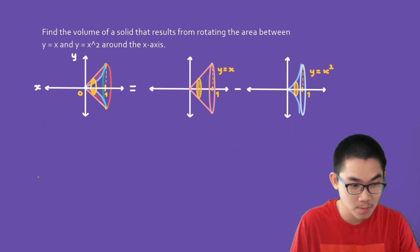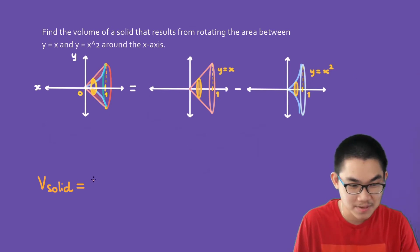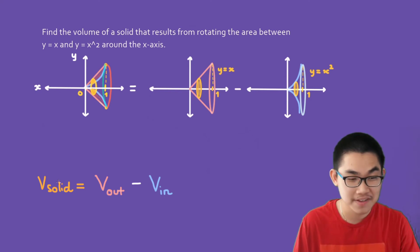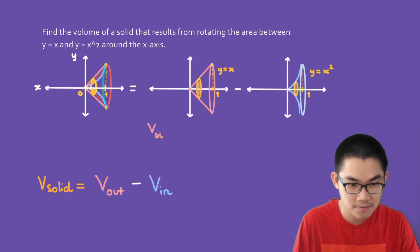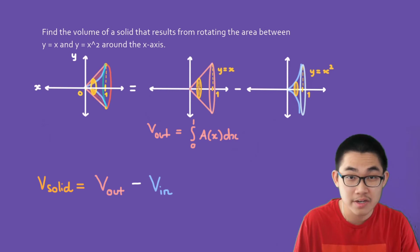To obtain the volume of this solid, we take the volume of the outer function — which is the pink function — and subtract the volume of the inner function. That gives us the volume of the solid. The volume of the outer function, V_out, is the integral from 0 to 1 of A(x) dx, where A(x) is the area of the circular cross section.